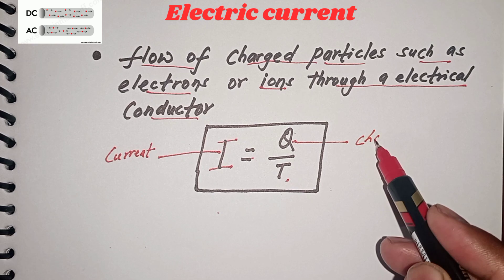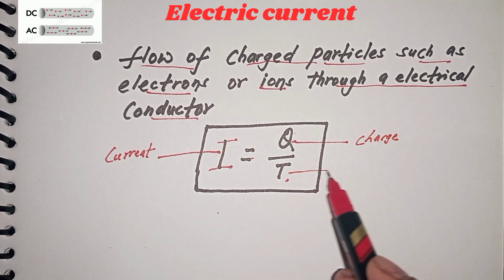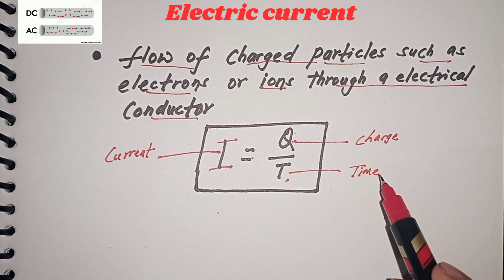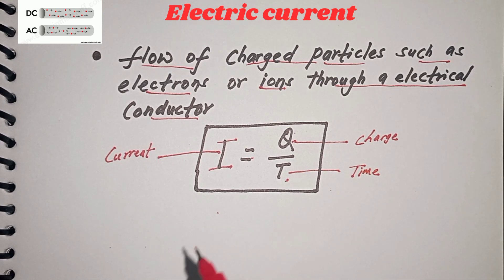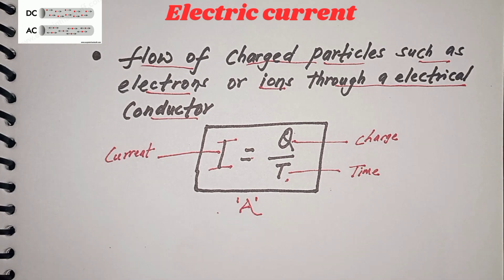charge, and T refers to time. The unit of current is ampere and it is denoted by A. Now what